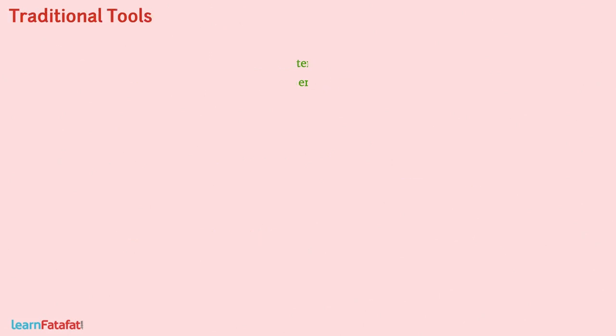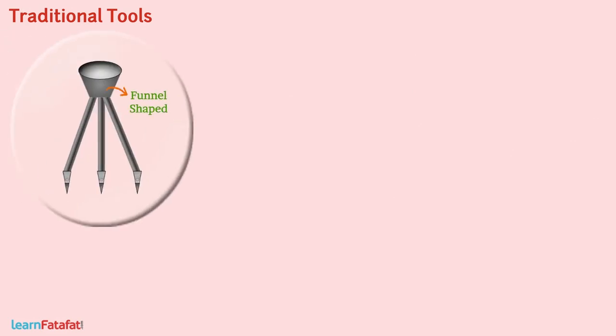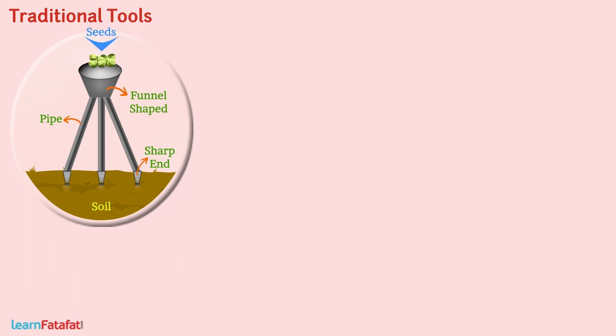Now let me introduce some tools which are used for sowing. Traditional tools: it is a funnel-shaped tool provided with two or three pipes. The pipes have sharp ends which go into the soil. Seeds fill into the funnel, pass through the pipes, and go deep into the soil.